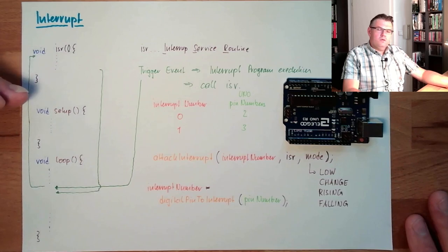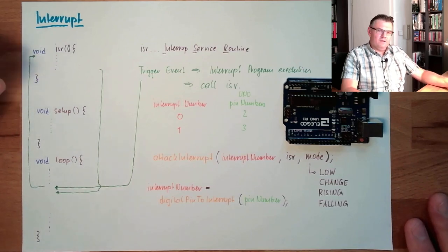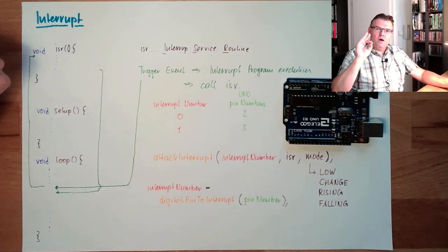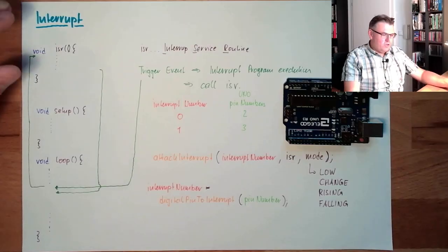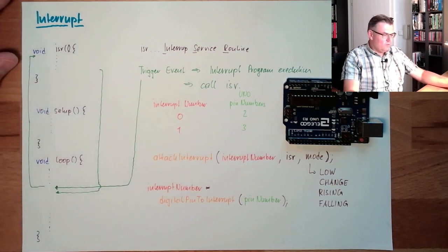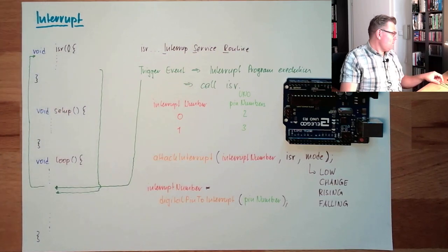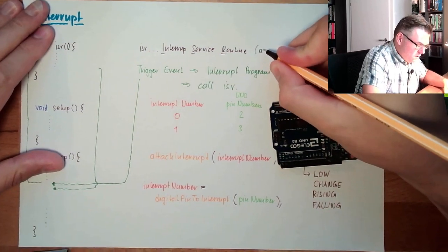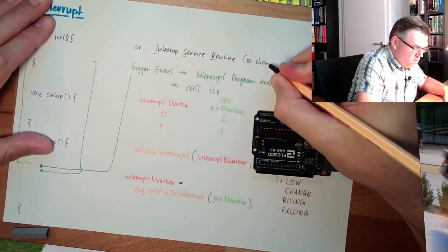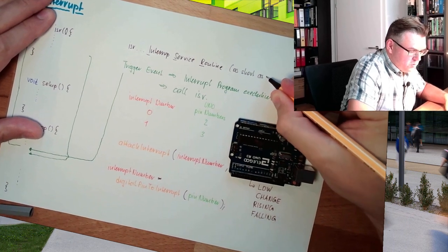This is also why an interrupt service routine should be rather short. You don't want to code a lot of code inside there, just react on the input somehow. Always short, as short as possible. That's a rule.